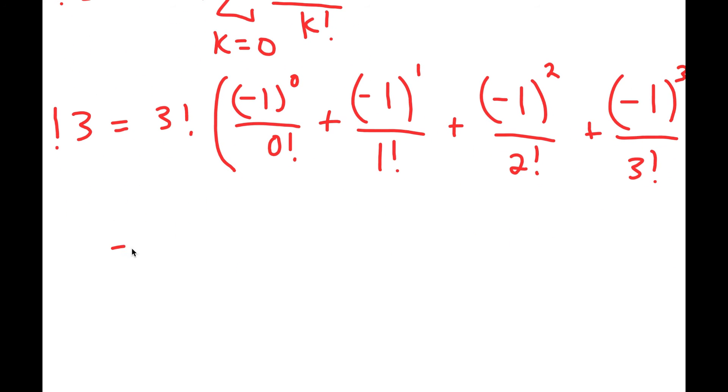So now to simplify this, it turns into three factorial times negative one to the power of zero is just one. And zero factorial is also one plus negative one to the power of one is negative one, one factorial is one plus negative one squared is positive one, over two factorial, which is two plus negative one to the power of three is negative one over three factorial, which is six.